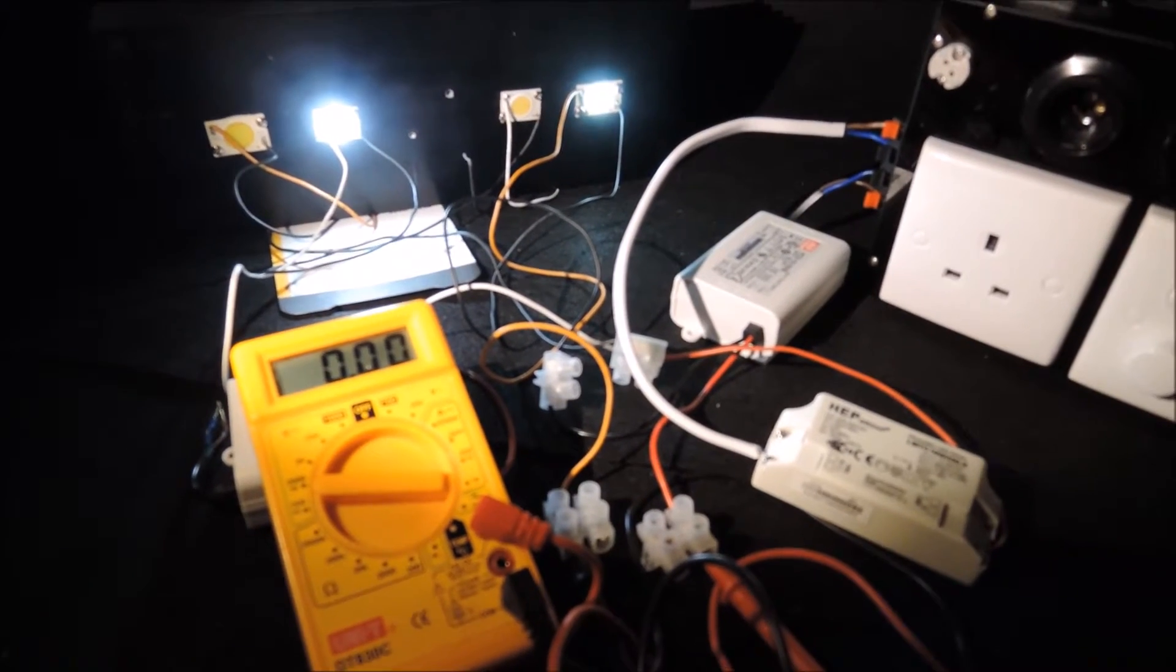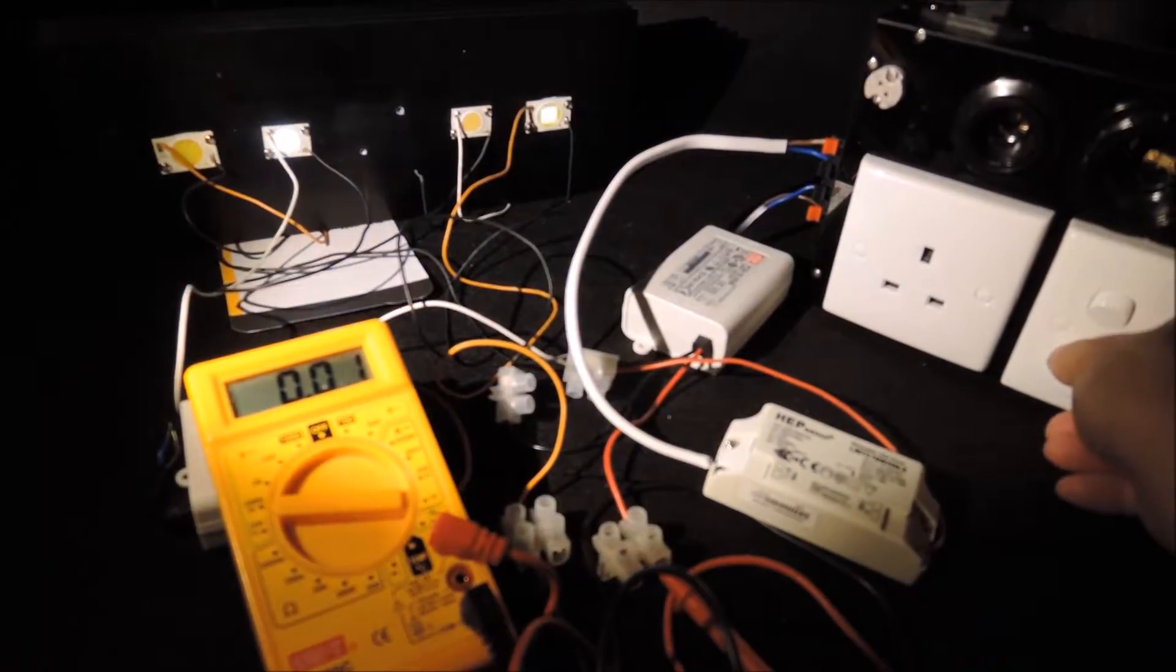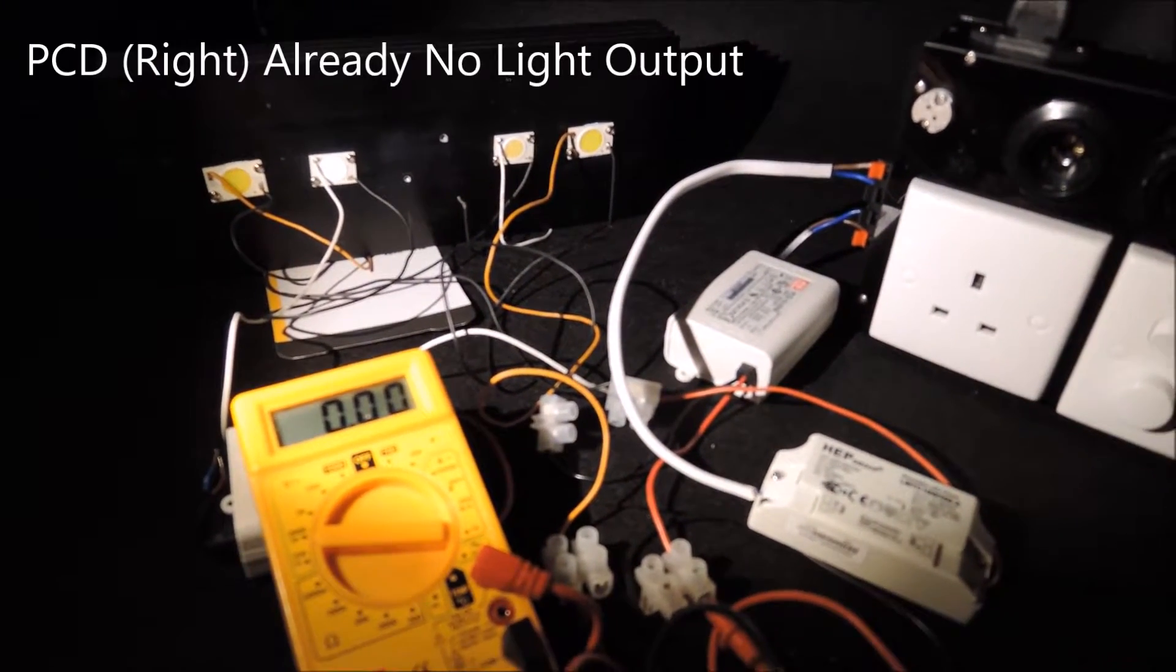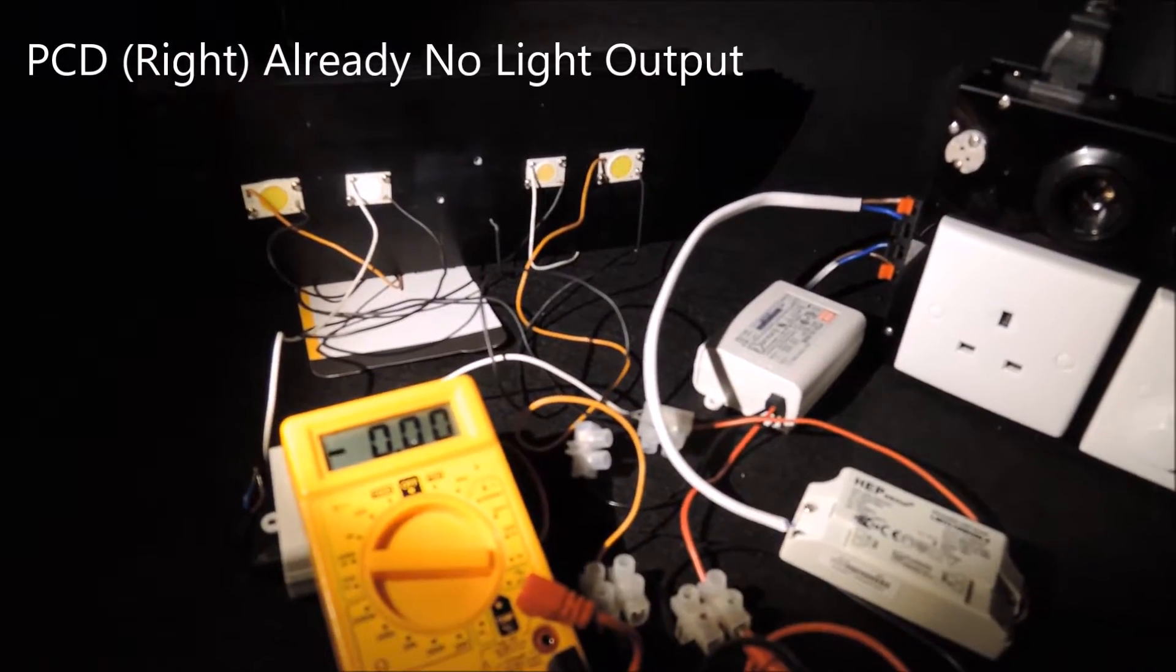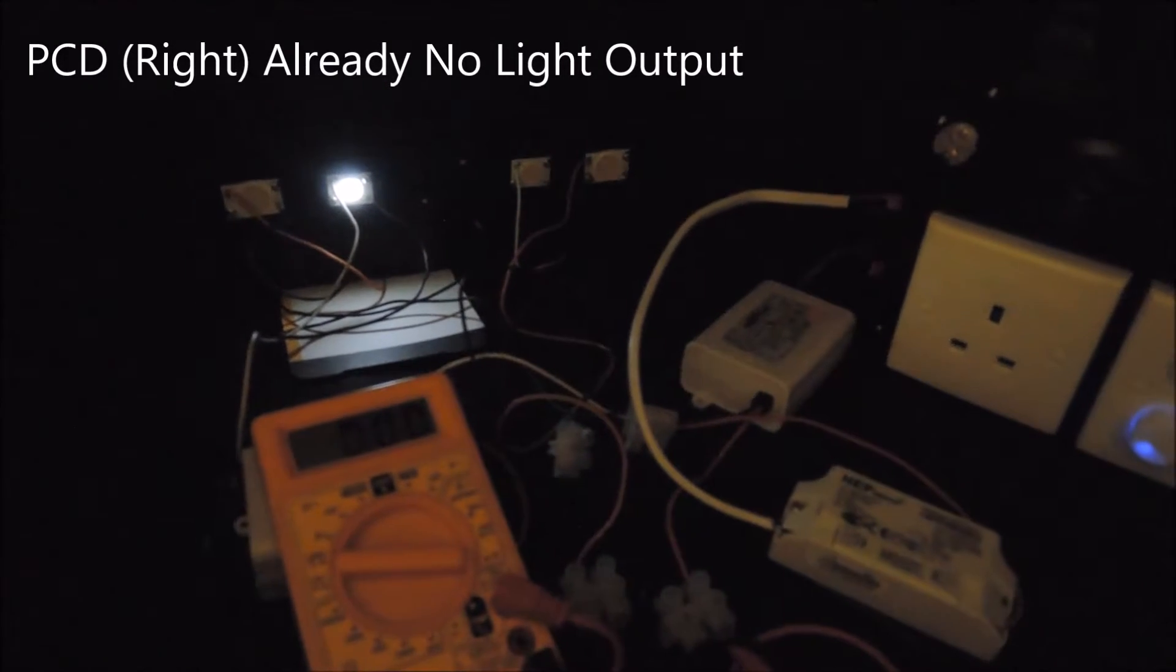Now as we also continue to dim, you'll notice the Meanwell driver actually goes off because the COB has no more light output earlier than the HEP driver.